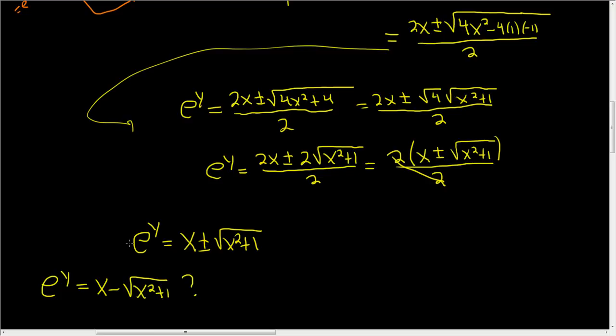Let's think about it. e^y has to be positive. So the only way that this is not a possibility is if this is negative. Now, is it negative? Let's see. x, well, we know x is less than the square root of x^2 plus one.